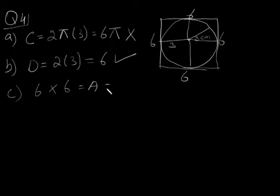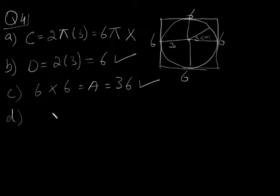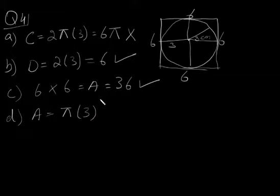So the area of the square is 36, which is a rational number. In part D, it asks for the area of the circle. The formula is πr², so π times 3², which gives 9π. And 9π is an irrational number.